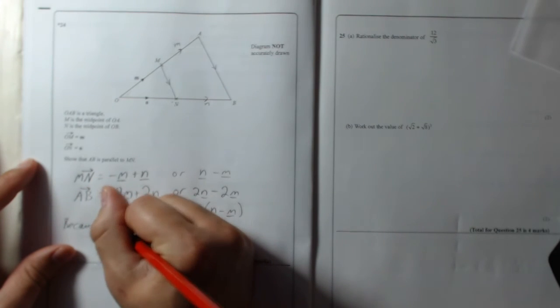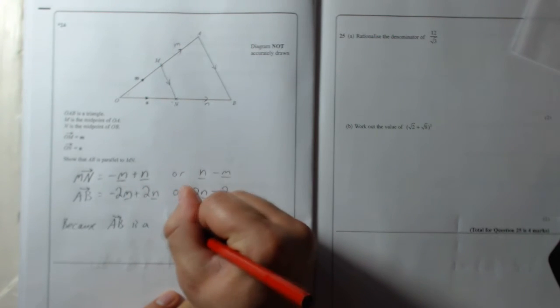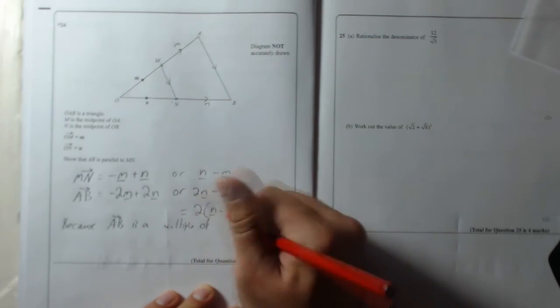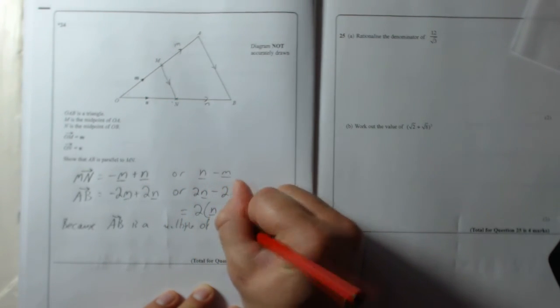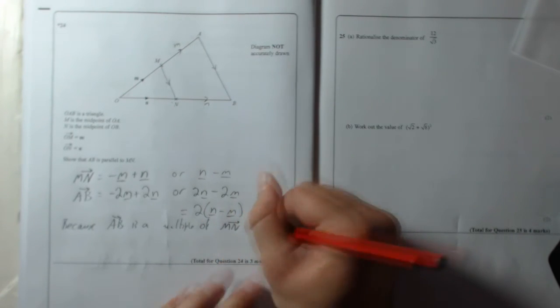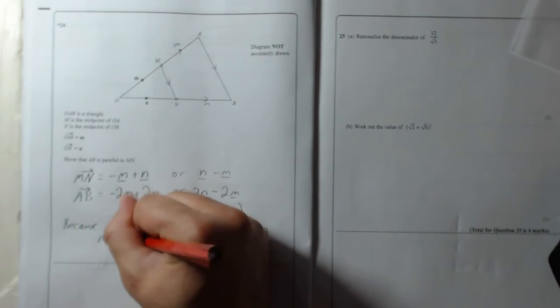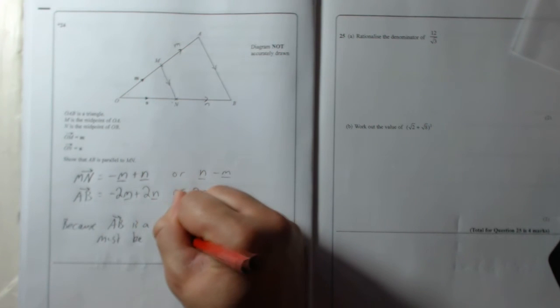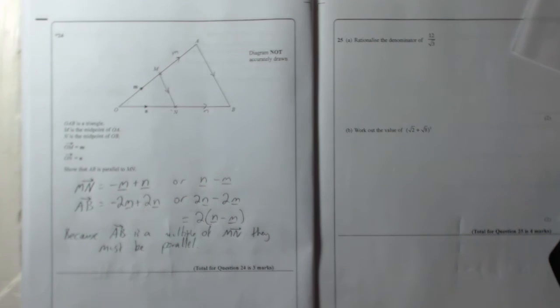So I'm going to write: because AB is a multiple of MN, they must be parallel. And that's that one. It's a fairly straightforward one for a vector question.